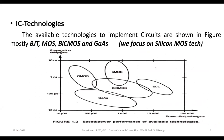When considering what technologies are used in integrated circuits, the technology is determined by the type of transistor used. For example, if bipolar junction transistors are used inside the IC, it is called BJT technology. If MOSFETs are used, then MOSFET-related technology is used.